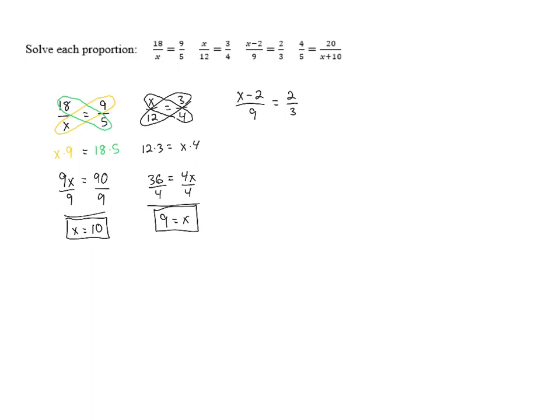But we can still do this. If we cross multiply, we've got 9 times 2 equals x minus 2 times 3. And I put the x minus 2 in parentheses to make sure that that whole thing gets multiplied by 3.